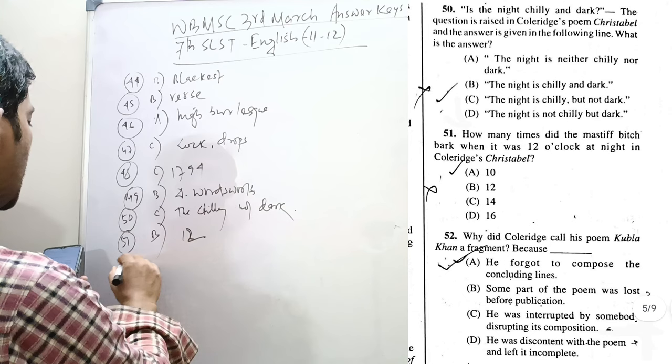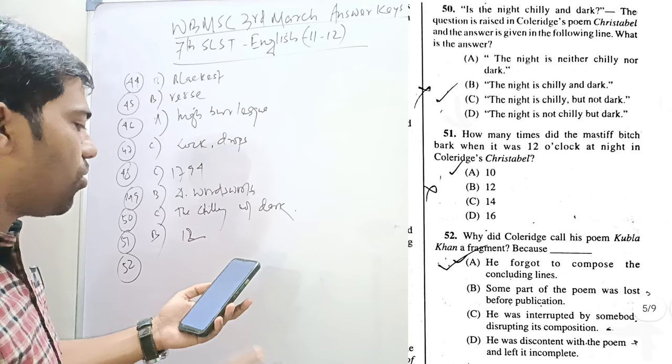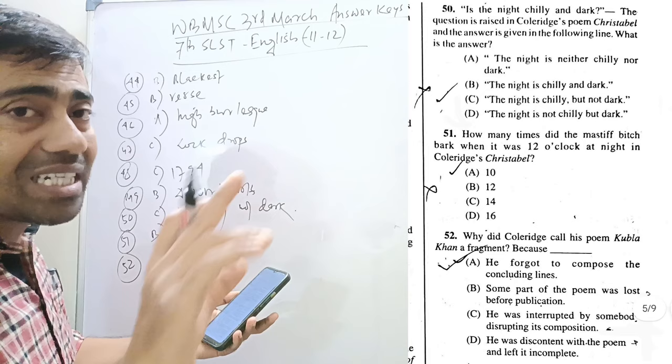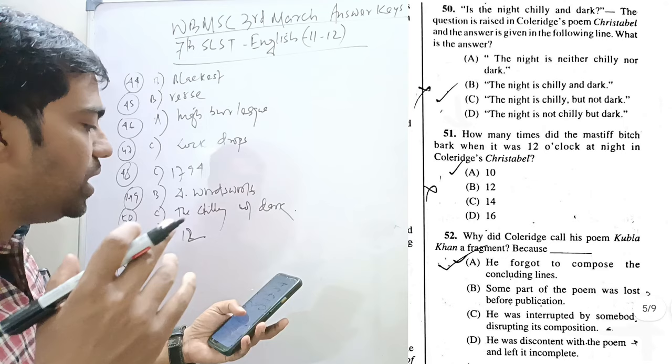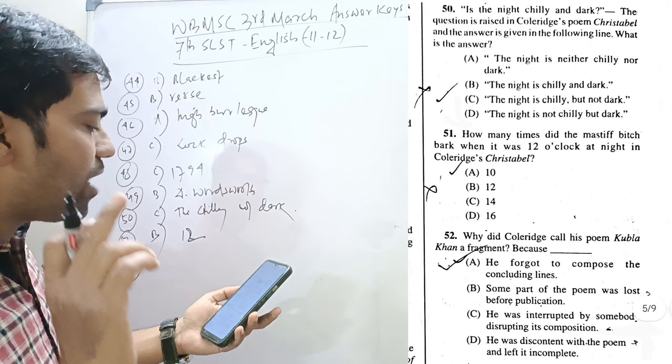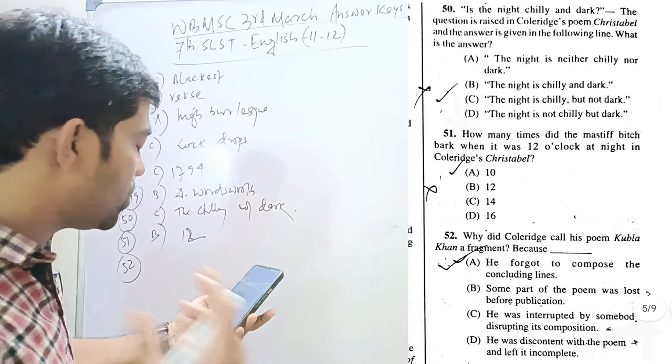How many times did the Mastiff bitch bark when it was 12 o'clock at night in Coleridge's Christabel? So, the line is thus, four for the quarter and 12 for the 12 o'clock. So, 12 o'clock is 4 and 12, 16. So, 12 would be the right answer. If the question would have been how many times in total, then it would be 16. But here particularly mentioned that 12 o'clock had how many times. So, at 12 o'clock, the Mastiff bitch howls 12 times.